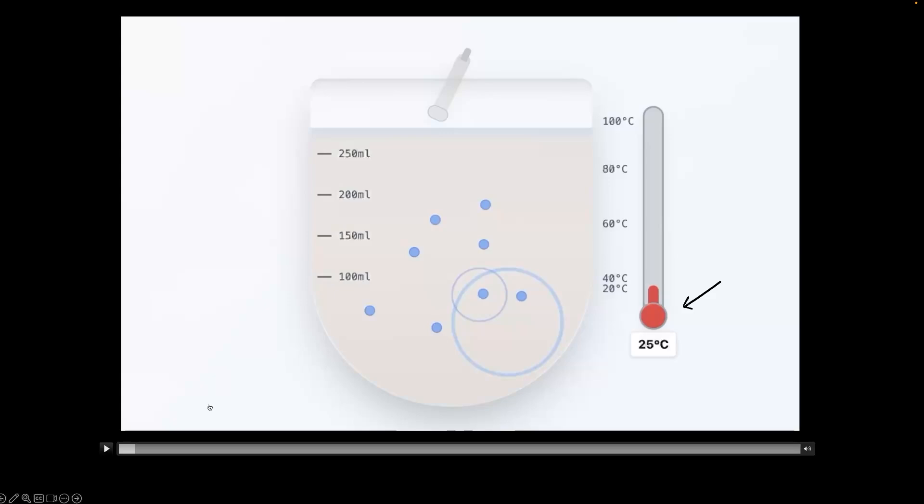So we added some sugar here. This is just stirring happening. And let's add more sugar. Let's add more sugar. Let's add more sugar. And as you can see, the temperature is constant. It's at 25 degrees Celsius.